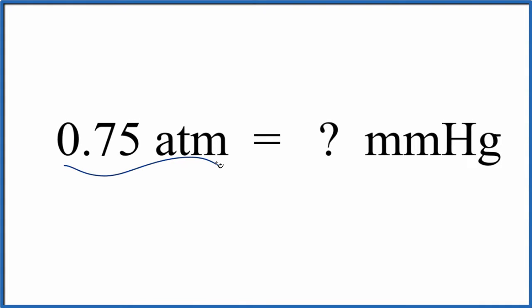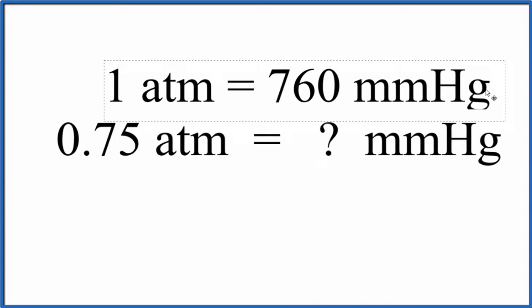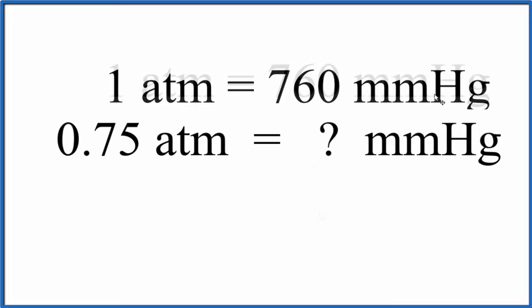Let's convert 0.75 atmospheres to millimeters of mercury. There are two ways we could do this, but for both of these you need to realize that one atmosphere is equal to 760 millimeters of mercury.